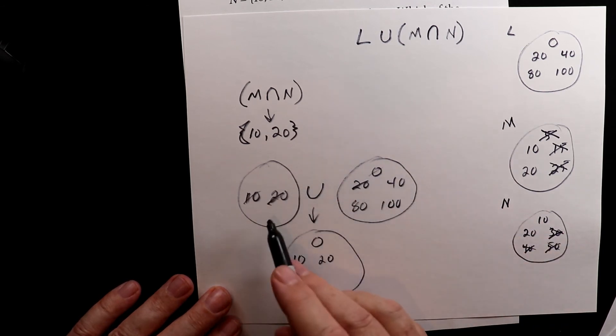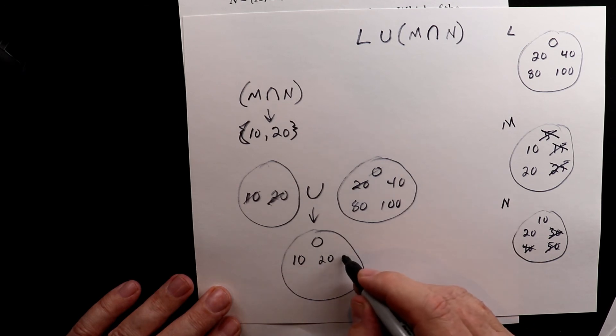Then I see a 40. There's no 40 there, but that's okay. So I bring in the 40. Then I have an 80 and then 100.